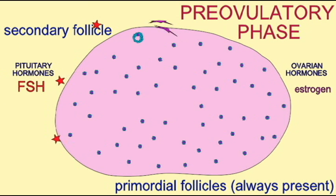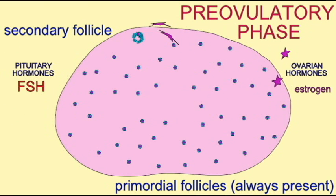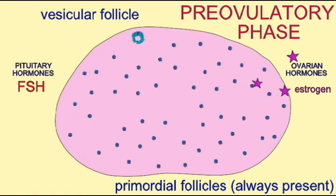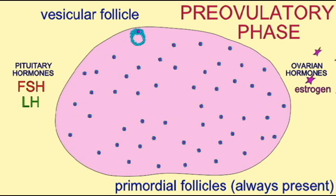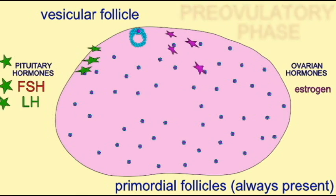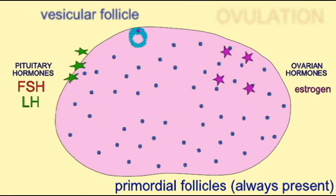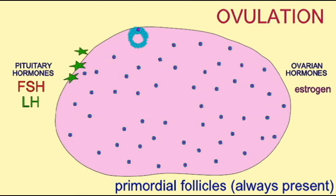The estrogen can then stimulate the uterine lining as the functional layer of the endometrium begins to develop. In the late preovulatory phase, a surge in the hormone luteinizing hormone, or LH, causes ovulation. This pituitary hormone is the primary signal for ovulation.